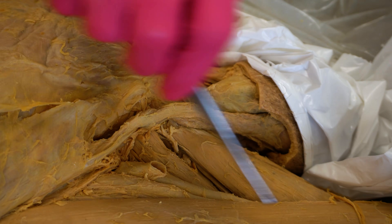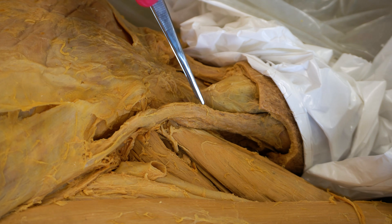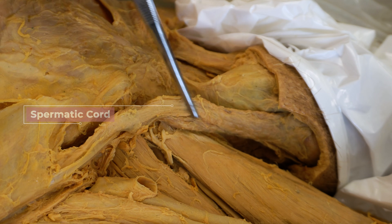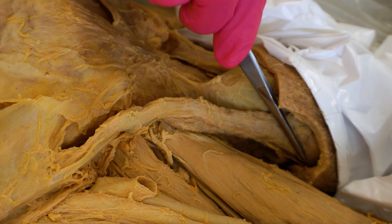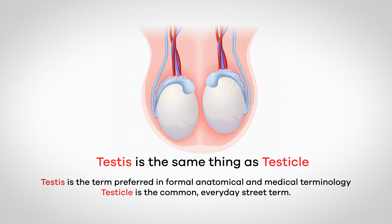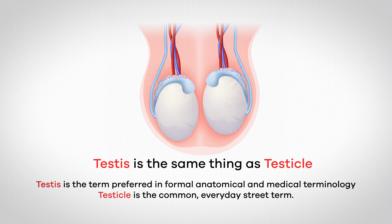Let's start by going over the relevant anatomy for a vasectomy by taking a look at this cadaver dissection. You are looking at the right side of the groin, and the first structure I want to highlight is the spermatic cord. It's going up towards the abdomen, or if we go downward, it's going to take us down towards the right testis or right testicle. Testis is the same thing as testicle — it's just that testis is more commonly used in anatomical and medical discussions, whereas testicle is more of the everyday street term.